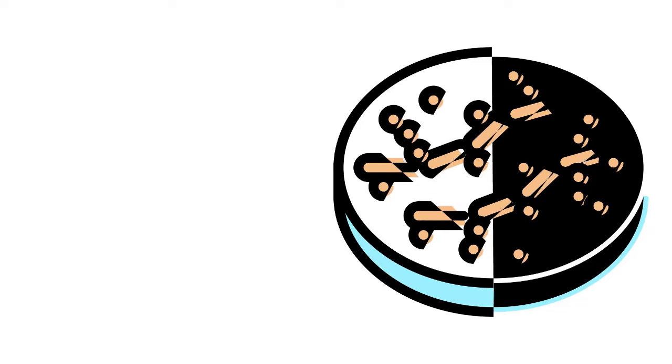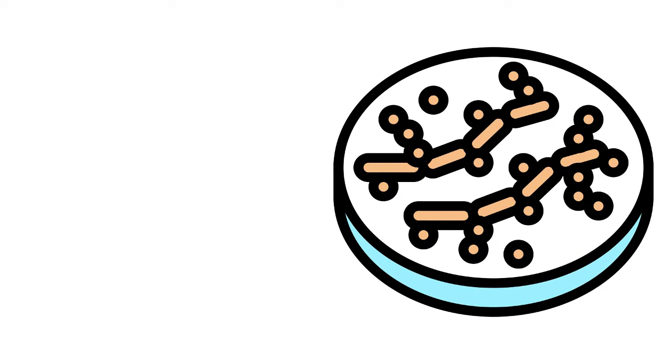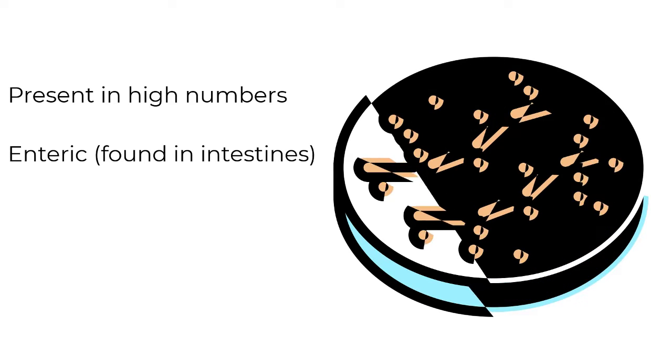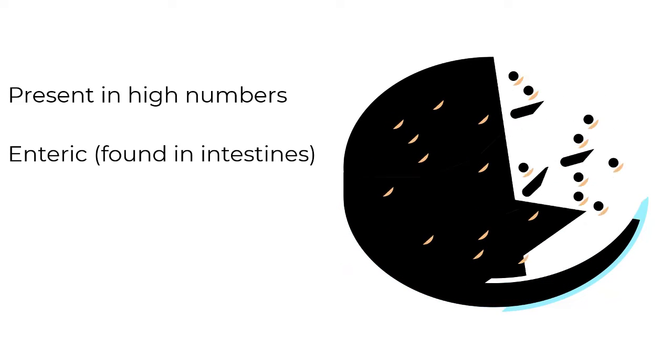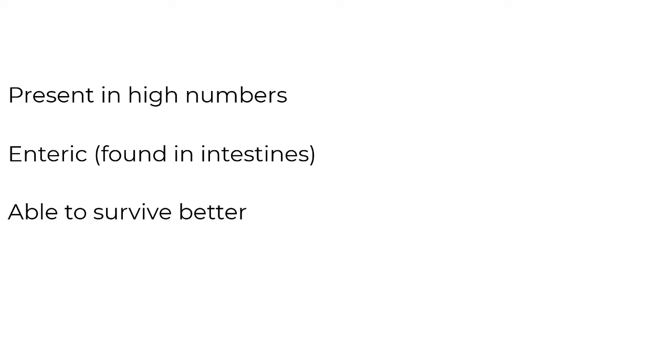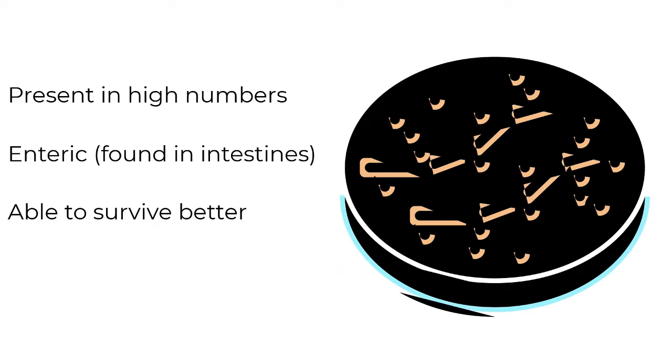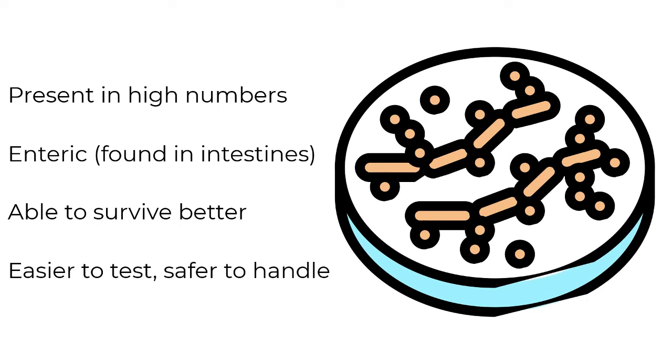To summarize, indicator bacteria are chosen because in a fecal contaminated sample, they are present in high numbers, enteric, found in the intestines of animals and usually do not naturally occur in the environment, able to survive better in water than infectious pathogens, making them more robust and thus easier to test for and safer to handle.